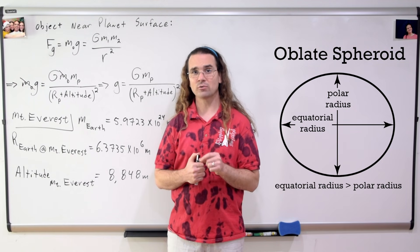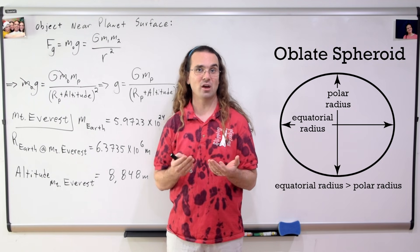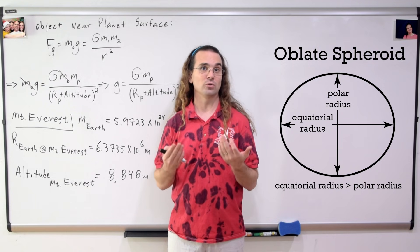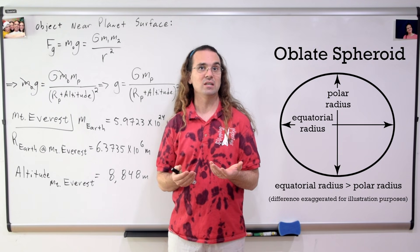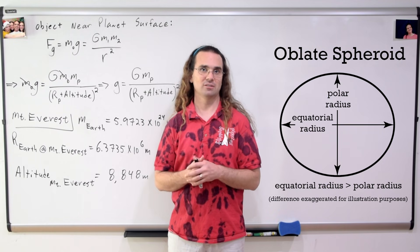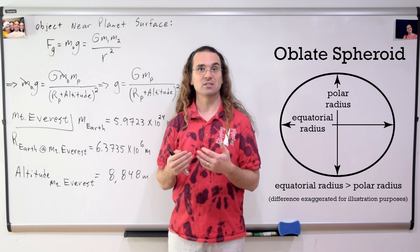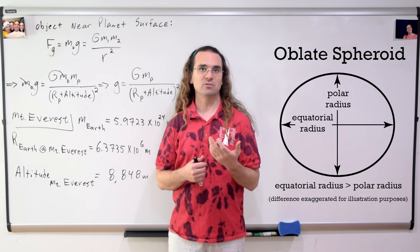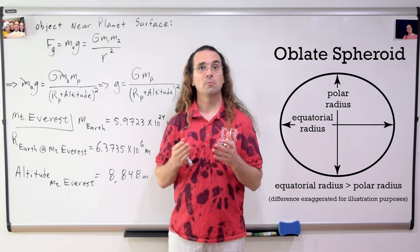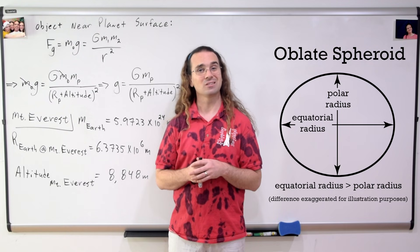The Earth is an oblate spheroid. It actually has a larger equatorial radius than polar radius. The larger equatorial radius is caused by the rotation of the planet and the planet's own inertia. So yes, we need to use the radius of the Earth at Mount Everest. And the altitude of Mount Everest, or the distance Mount Everest is above sea level, is 8,848 meters. Plugging those values into our equation gives us...